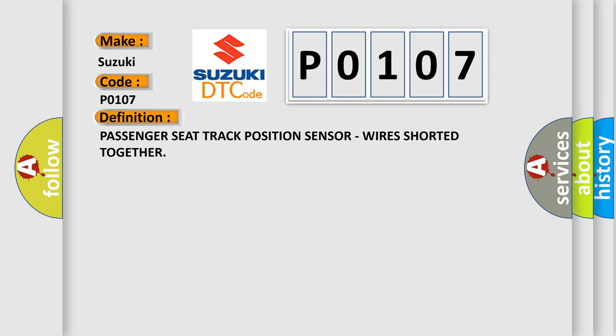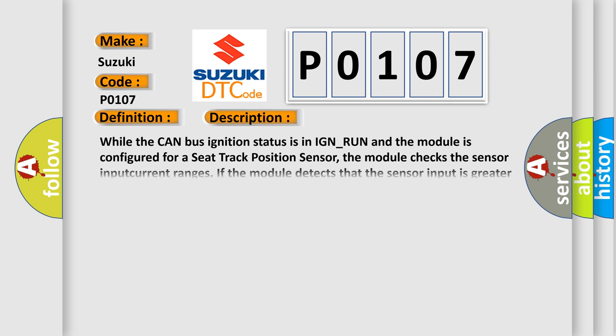Here is a short description of this DTC code. While the CAN bus ignition status is in IGN_RUN and the module is configured for a seat track position sensor, the module checks the sensor input current ranges. If the module detects that the sensor input is greater than or equal to 171 milliamperes for a minimum of 25 seconds, this diagnostic error is triggered.